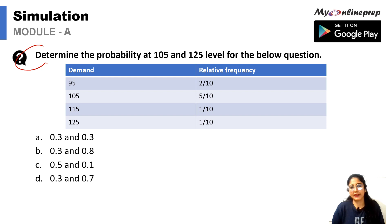We have to determine again the probability at the 105 and 125 demand level.